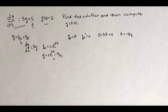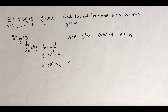Once we have the general solution, we can find the solution of the initial value problem. We make y equal to 2 and t equal to 0, which gives us that c must be equal to 2 plus 5 thirds, which is 11 thirds.